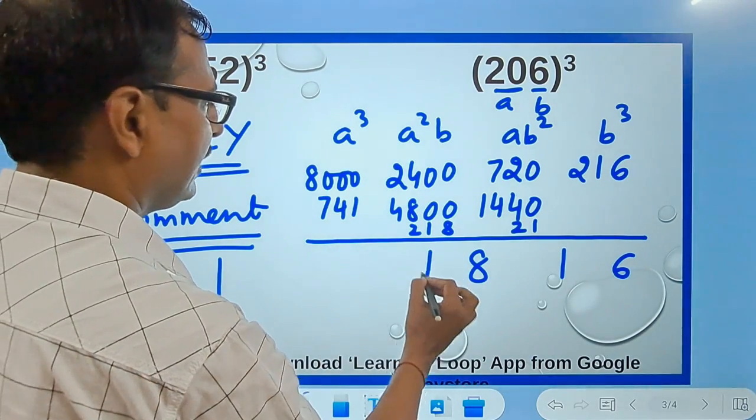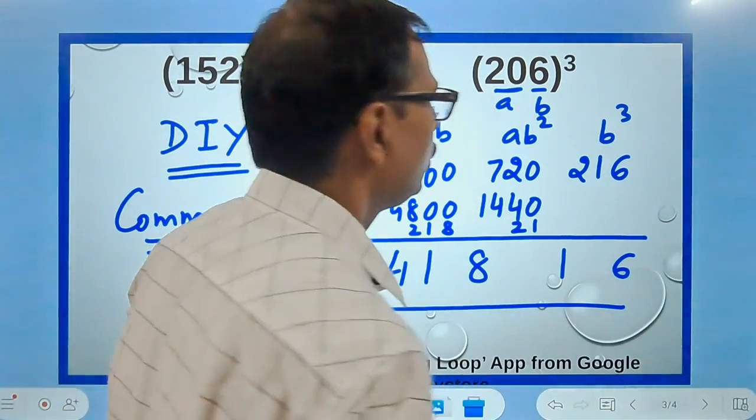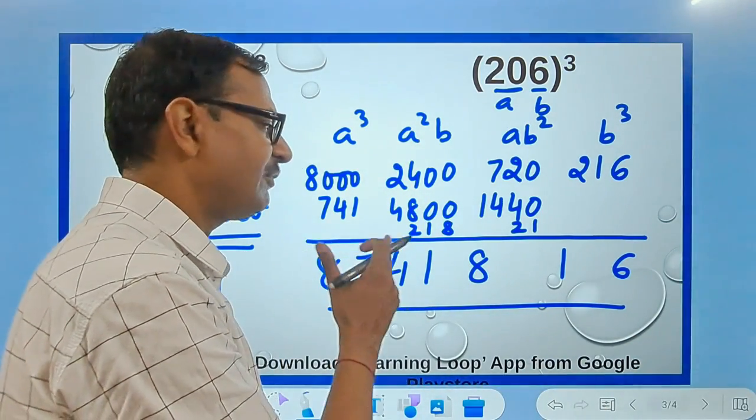So you have 1, 4, 7, 8. So the cube of 206 is 8,741,816.